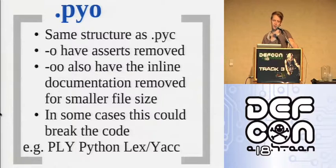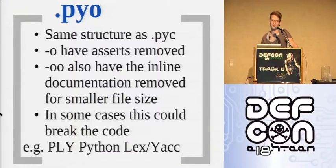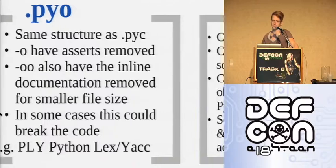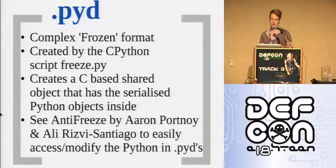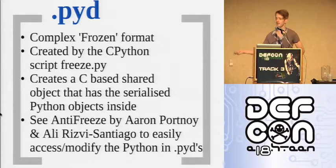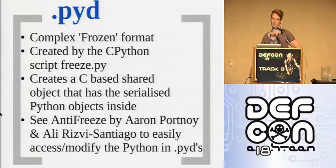The PYC format is purposely undocumented by the Python developers to allow them flexibility to change the bytecode format without breaking things. PYOs have the same structure as PYCs but they are optimized - first level removes all the asserts, second level removes asserts and inline documentation. Nothing to do with speed, purely file size. PYD is the most complex format Python will produce by itself, coming with CPython, compiling into a shared compiled C object. There's been some good work by Aaron Portnoy and Ali with a toolkit called antifreeze where you can unpack the PYDs, modify the bytecode, and repack them.